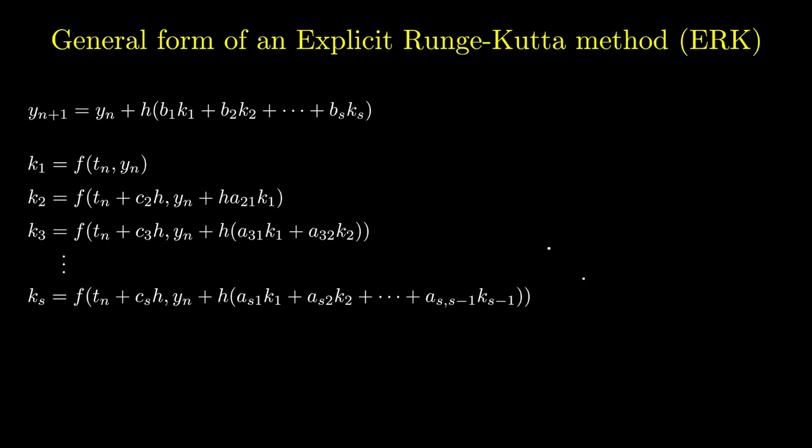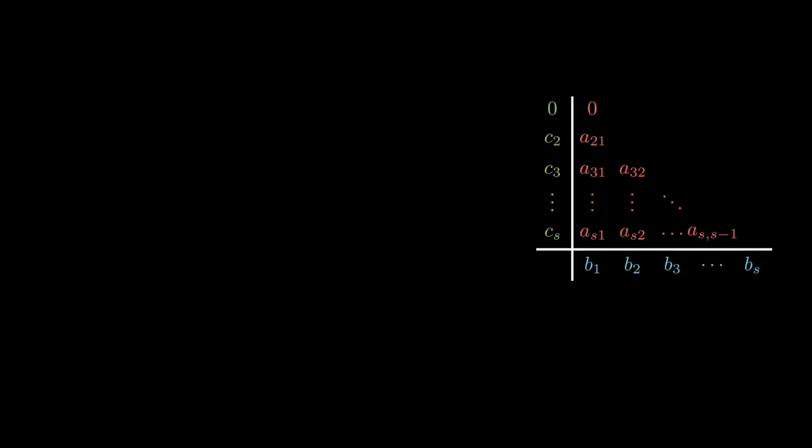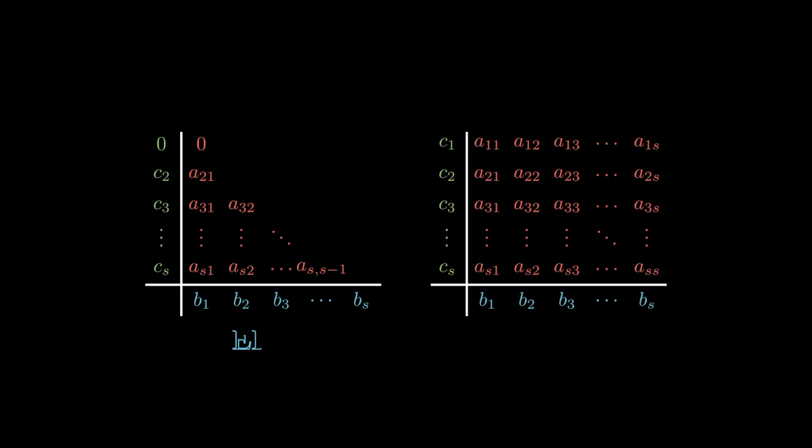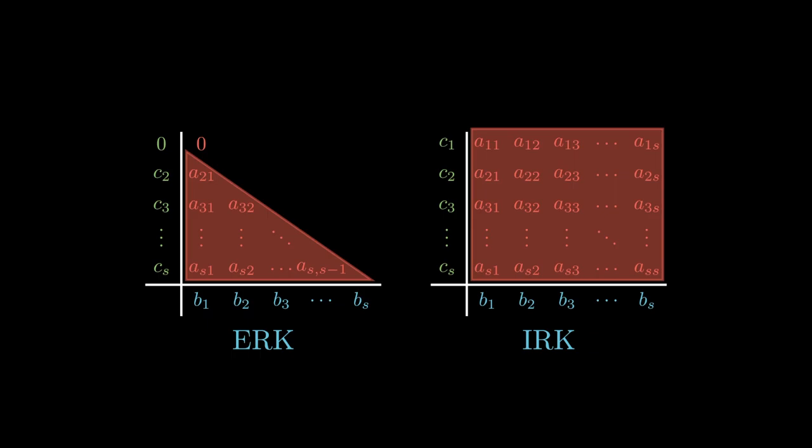We can write the values of a, b, and c of an ERK method in a Butcher tableau in the same way as before. Comparing to that of the Butcher tableau for an IRK method, we see that the obvious difference is that the ERK Butcher tableau only has values for a in the lower triangular region.